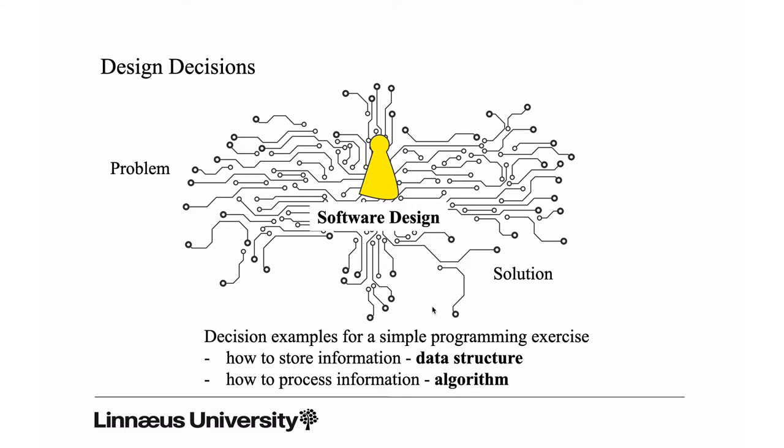The second design decision is how you process the information. The information you store in data structures you should do something with it, and depending upon what that is you will have to design an algorithm. Sometimes you can pick and choose from existing algorithms and just adopt and adapt them for your purposes. So two examples of simple problems and solutions that tell you a little bit more about what a design decision is.